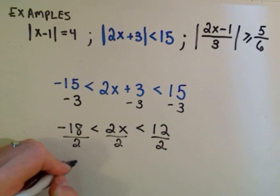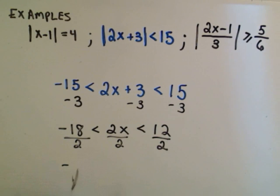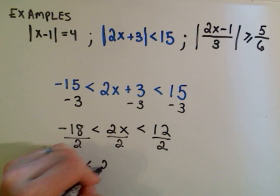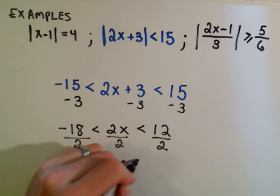Negative 18 over 2 is negative 9. Negative 9 less than, not 2x, but just plain old x, less than 6.